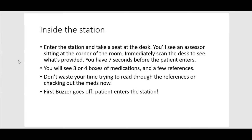Inside the station, once you enter, take a seat at the desk. You'll see an assessor sitting at the corner of the room — they are documenting your interactions and scoring them. Immediately scan the desk to see what's provided: you'll see a few boxes, some references, and paperwork. Don't spend too much time trying to understand what's on the desk because you only have about seven seconds before the patient enters. The patient is actually an actor or actress, and as soon as you hear the buzzer, the patient will enter the room and take a seat at the desk.